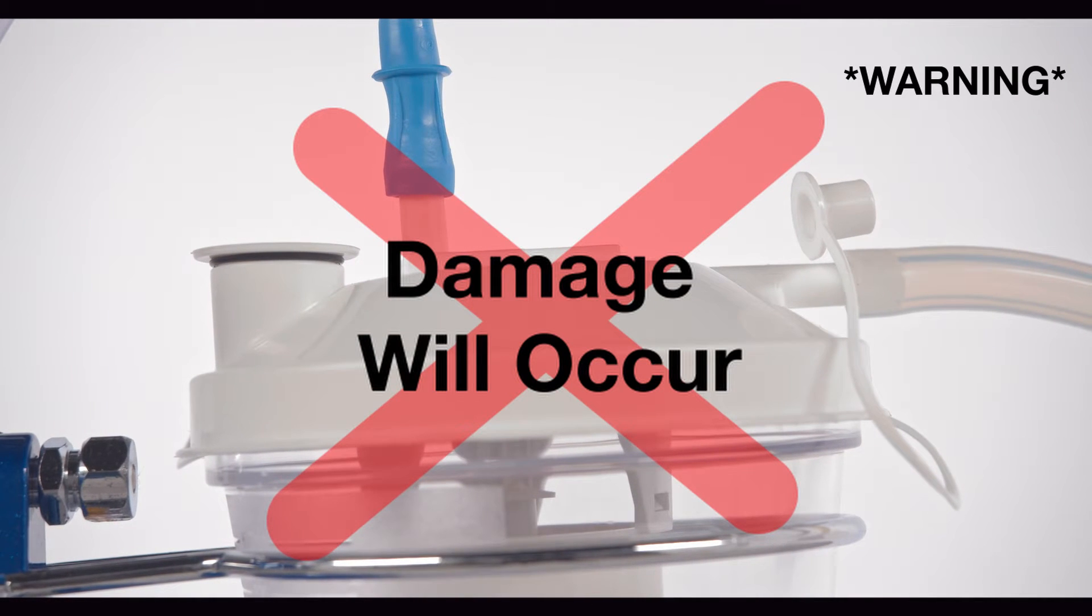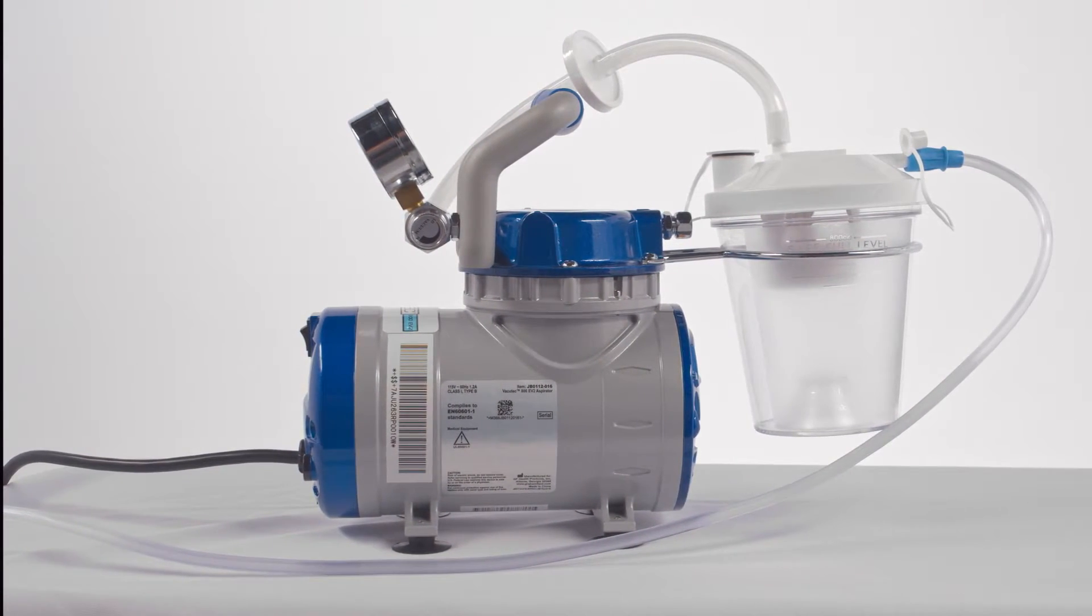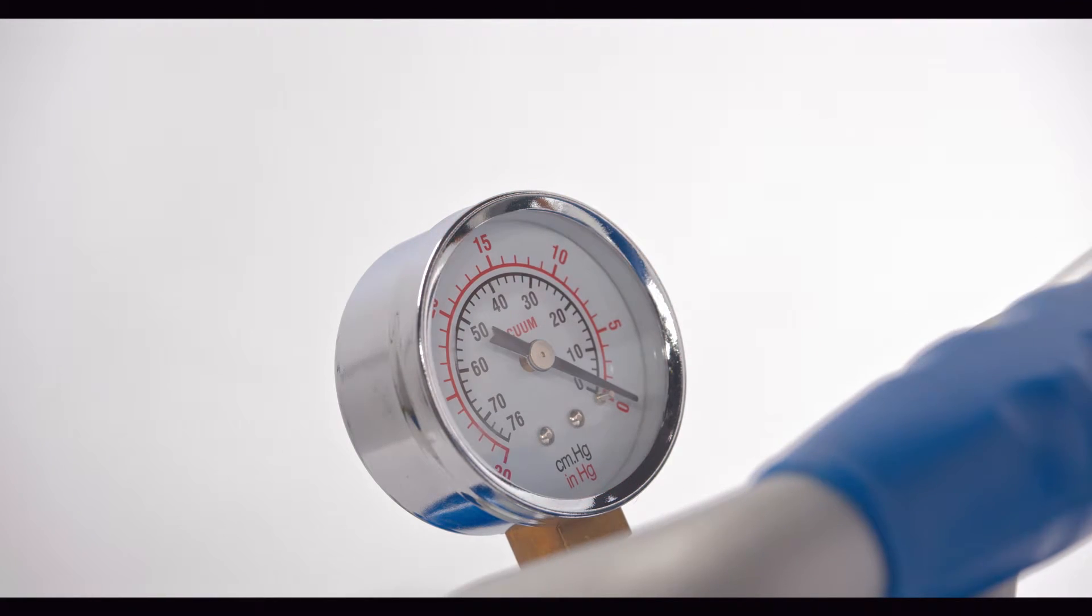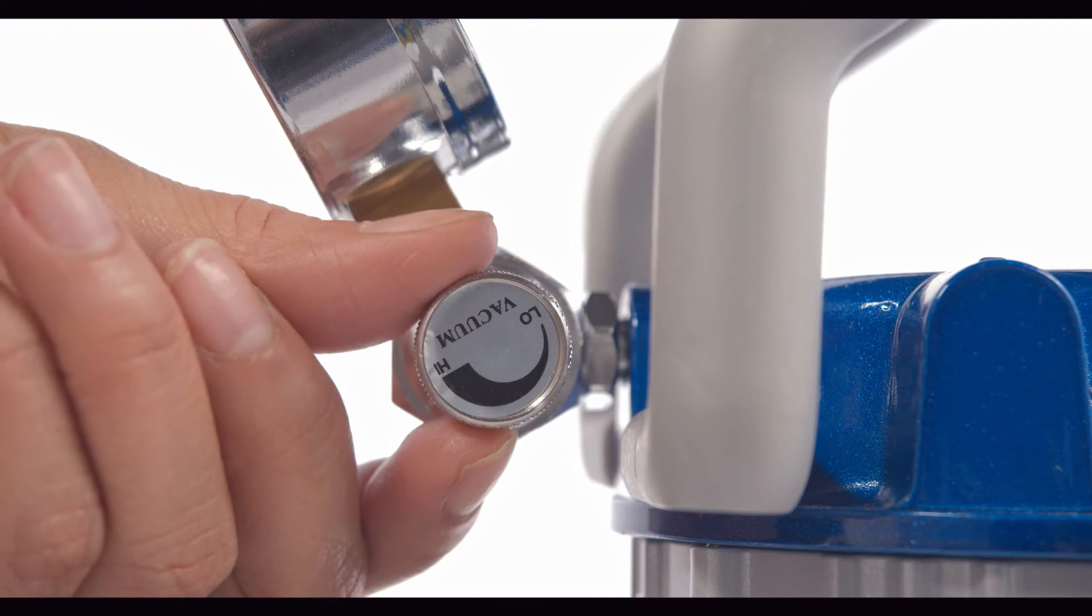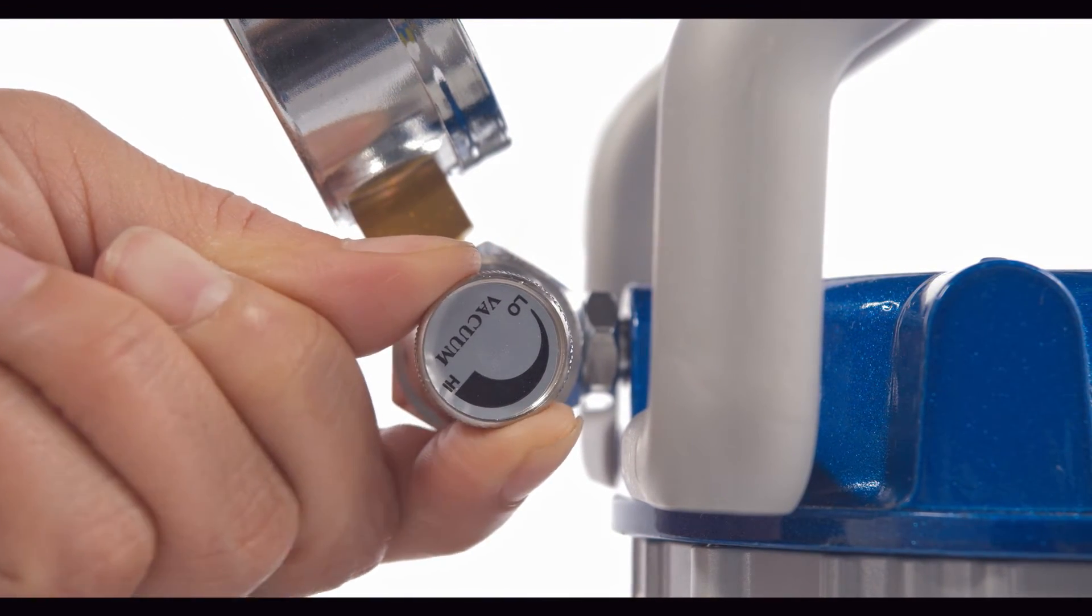After connecting the tubing, your John Bunn aspirator is ready to use. The gauge on the unit will allow you to see the amount of suction pressure. The suction or vacuum adjustment knob can help you properly set the suction pressure based on the recommendations by your healthcare provider.